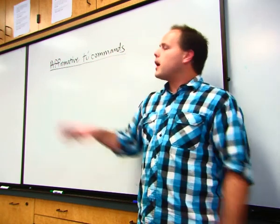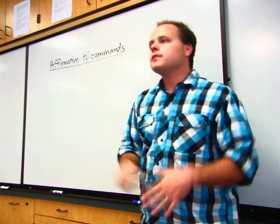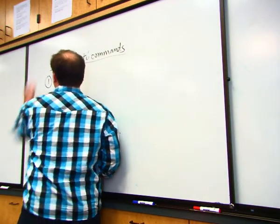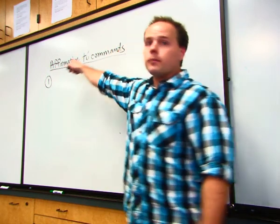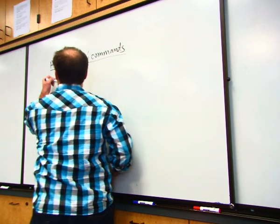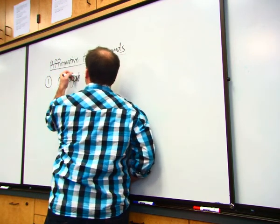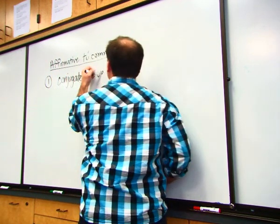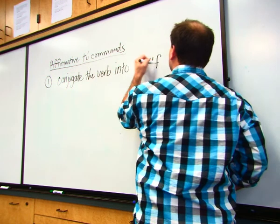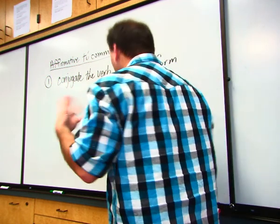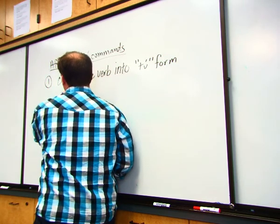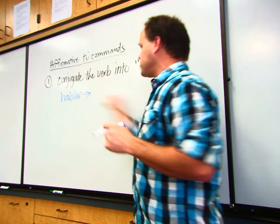We're only going to be talking about affirmative tú commands today — telling someone to do something. There are two steps. Step one: when you want to tell somebody informally what to do, you are going to conjugate the verb into the tú form. Let's use the example of the verb hablar. What does hablar mean? Talk. So the first step is to put it in the tú form. What's the tú form?